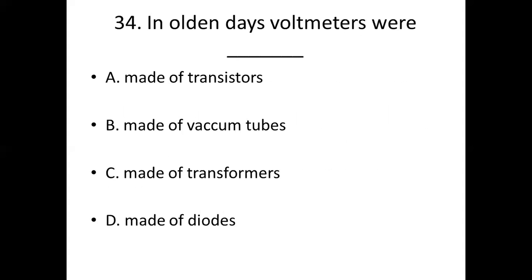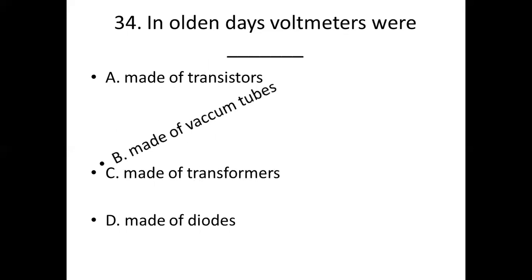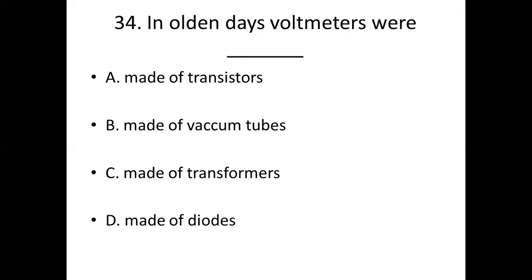Thirty-fourth bit. In olden days, voltmeters were dash. Option A: made of transistors. Option B: made of vacuum tubes. Option C: made of transformers. Option D: made of diodes. Answer: Option B, made of vacuum tubes.